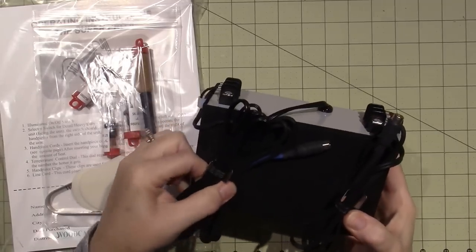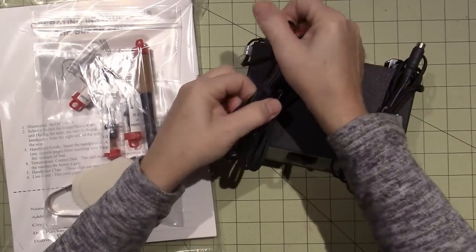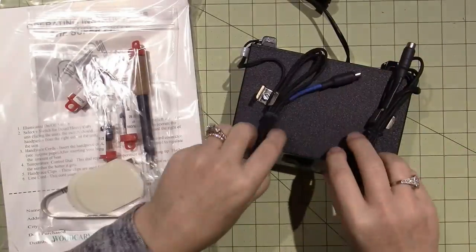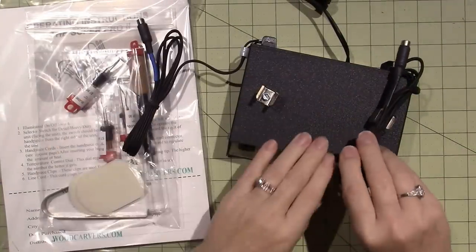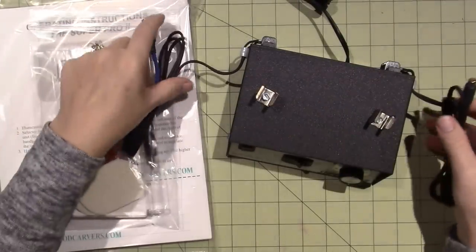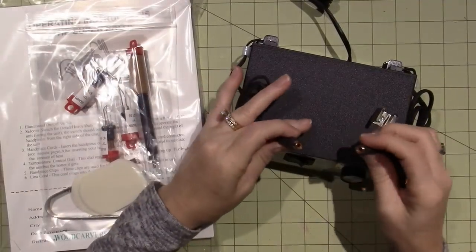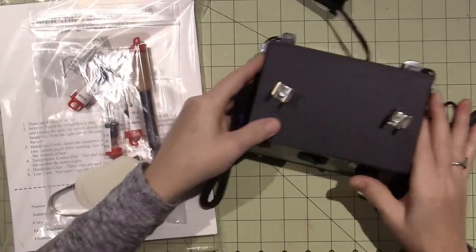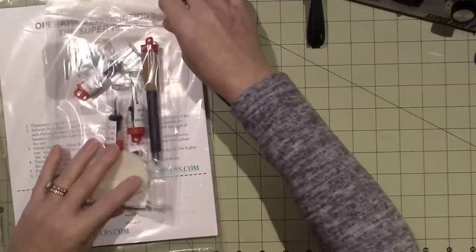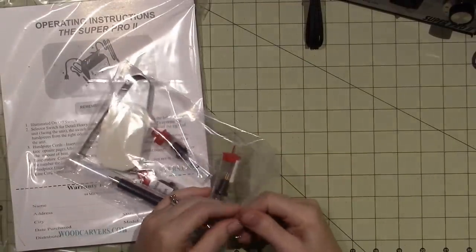Then there's the power cord that goes into the wall, but there's two connections - this is the power source for your pens. You have two plugs here that you can plug your pens into, and it came with what I guess is considered a kit.